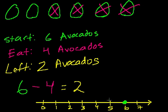So it says I ate four avocados. So I ate one, two, three, four avocados. So I will go four spots to the left when I eat my four avocados. And I will be left with two avocados.